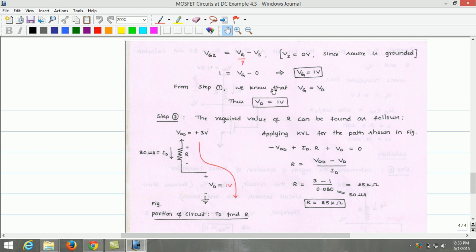From step 1, we know that the gate voltage and drain voltage both are equal since we short circuit the gate and drain. Thus, the drain voltage equals 1 volt.